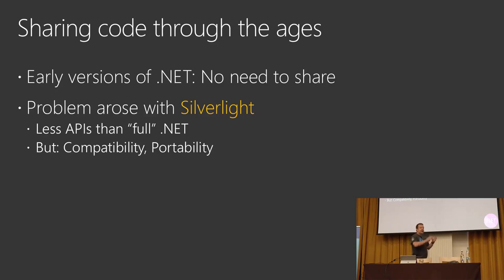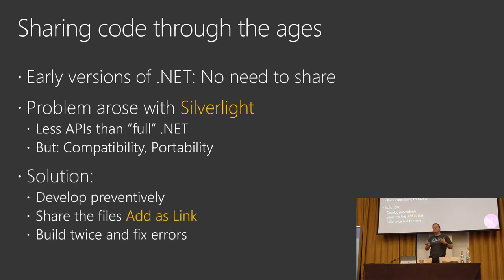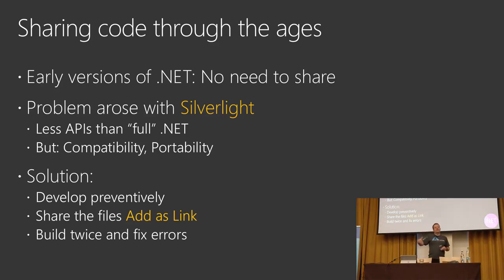For us as developers, when we had a Windows Presentation Foundation application and wanted to make a Silverlight version — which was compatible with macOS, even had a Linux version called Moonlight — we had the problem of knowing which APIs would run on Silverlight. What we were doing was developing preventively: checking documentation in MSDN where a combo box showed whether something was available in Silverlight. We would share files using a shortcut in Visual Studio, build twice — once for Silverlight and once for WPF — and fix the errors.